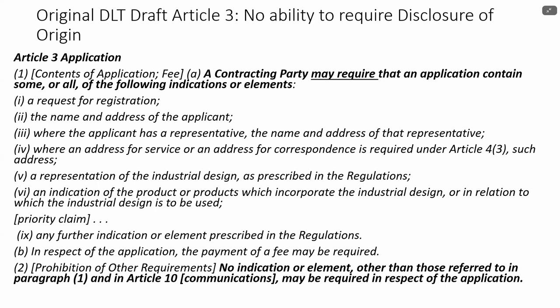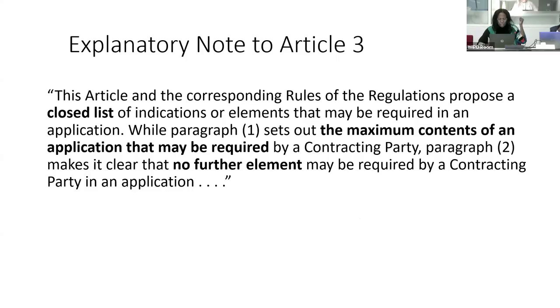So Article 3 started out and is still intended to be a closed list. The idea is that it should make it easier for applicants to obtain protection in multiple countries if they know the things they're going to have to provide, and that it's not that many things. This is in the explanatory notes, which have now been separated from the basic proposal. I encourage you to go back and look at the explanatory notes to see what the intention is in relation to these different provisions, because it's actually very enlightening.